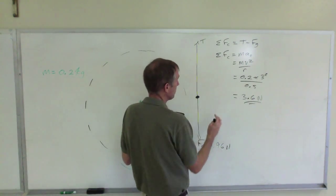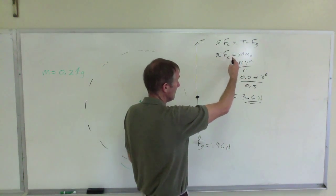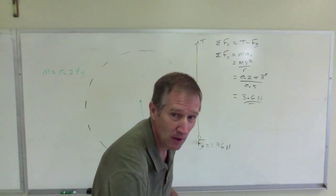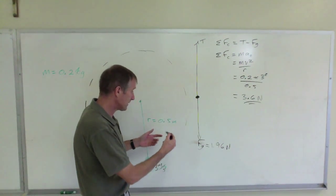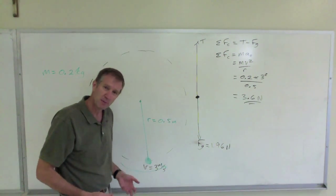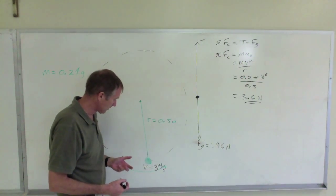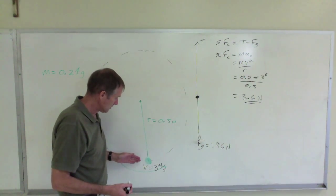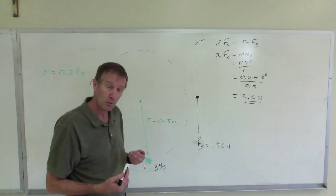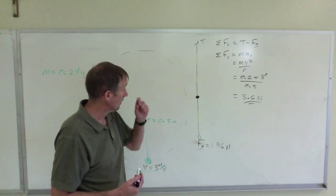So the centripetal force is 3.6 newtons. That's going to be the difference between the tension and the weight. They cannot equal each other. Why can't they equal each other? Because it's going in a circle. If it's going in a circle, it's changing direction. There has to be an acceleration. There has to be a net force. And that net force is directed up towards the center of the circle. It's centripetal. Remember, centripetal means towards the center.